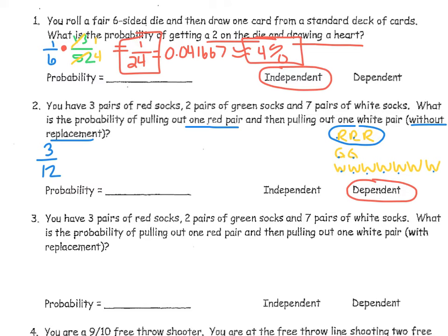For the second event — pulling out one white pair of socks — we already pulled out a red pair, so we cross out one red from our picture since it says without replacement. Now the probability of pulling out a white pair is 7 white pairs out of 11 total socks remaining in the drawer. Notice we have one fewer pair because of the red pair that stayed out. That's why these are dependent events — the second event changed based on the first.